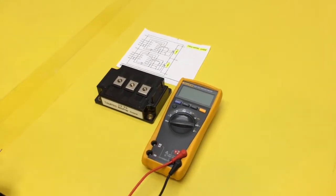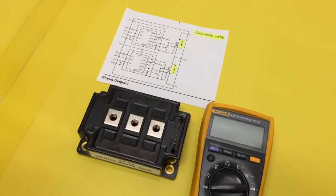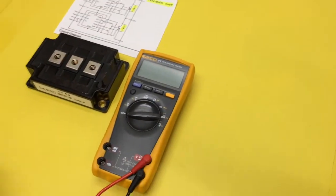Now we're going to look at testing the freewheel diode on a dual pack IPM-IGBT. Go ahead and put it on diode test mode.